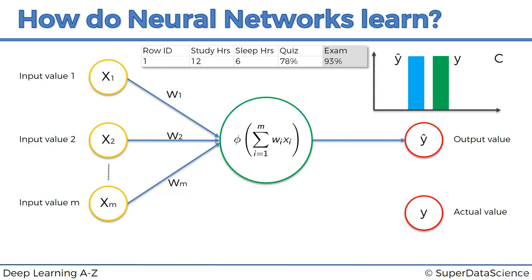To make one point very clear: throughout this whole experiment, we're dealing with just one row of data. For instance, the variable we're predicting is what result a student will get on an exam, and the independent variables are: how many hours did you study, how many hours did you sleep, and what did you get on the mid-semester quiz. The exam result of 93% is the actual value, so that's y. We feed these three values into our neural network for a second time, and we compare the result to y.